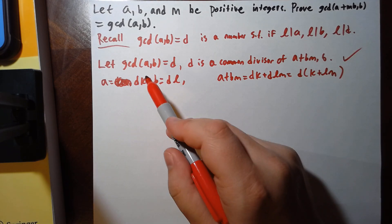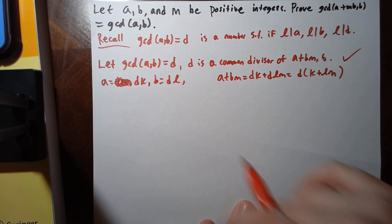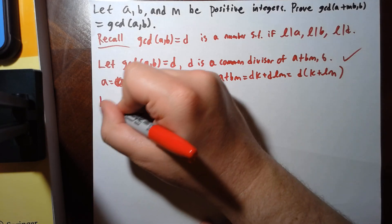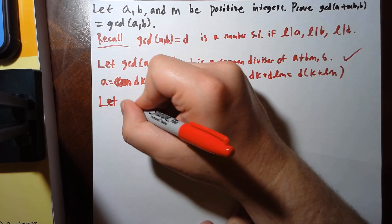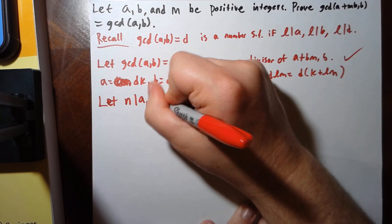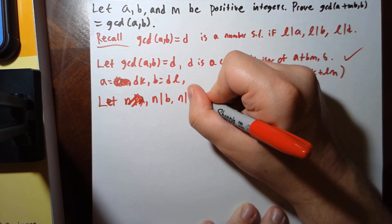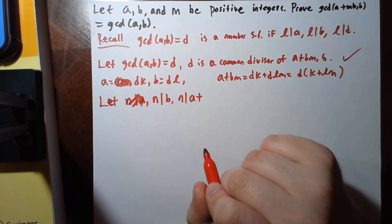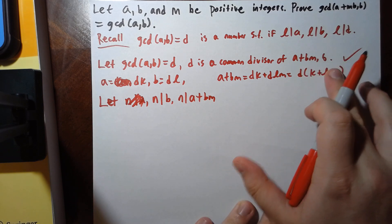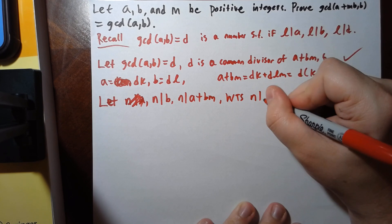So we have that the GCD of a and b is a common divisor of b and a plus bm. Now we want to show that if I have a common divisor, it has to divide the greatest common divisor. Let n divide a plus bm and n divide b. I now have a common divisor of these two. I now want to show that n divides d.